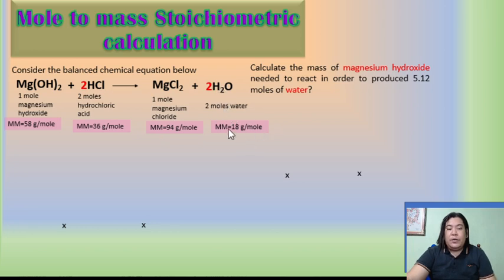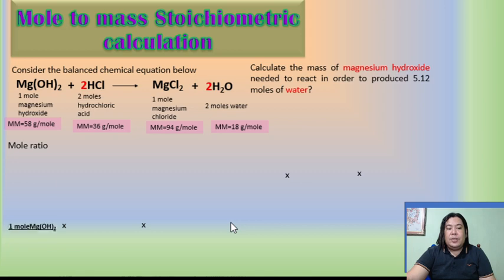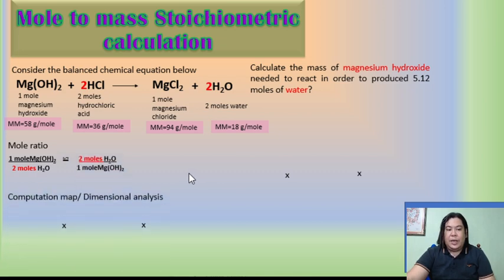The mole ratio needed is only for magnesium hydroxide and water. So your mole ratios are: one mole Mg(OH)₂ over two moles H₂O, and two moles H₂O over one mole Mg(OH)₂.